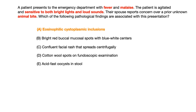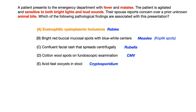Now let's go back to the question and eliminate the other answer choices, working backwards. Even if you didn't know that Negri bodies were eosinophilic cytoplasmic inclusions, or didn't recognize the question as rabies, could you eliminate choices? Choice B — bright red buccal mucosal spots with blue-white centers — is associated with measles; I'm describing Koplik spots.